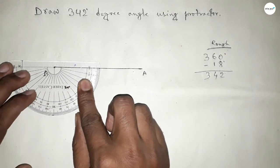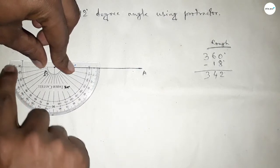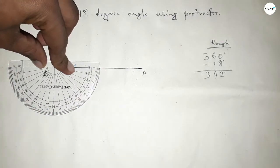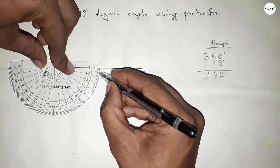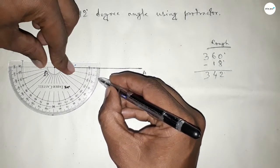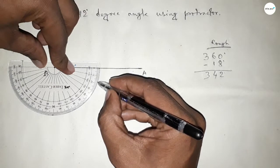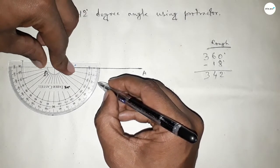And plus from this, so total 360 degree angle. Now counting 18 degrees: 1, 2, 3, 4, 5, 6, 7, 8, 9, 10, 11, 12, 13, 14, 15, 16, 17, 18.